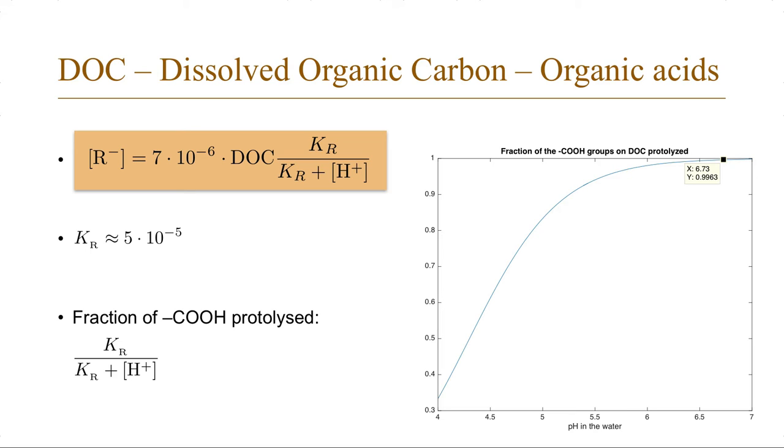That means that most of the organic acids are actually in the acid form, while already at pH 6, most of the organic acids are protolyzed, which means that R minus is a dominant form.